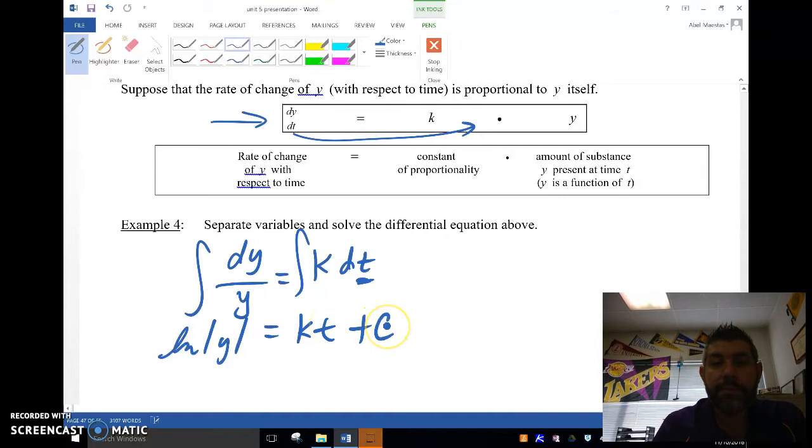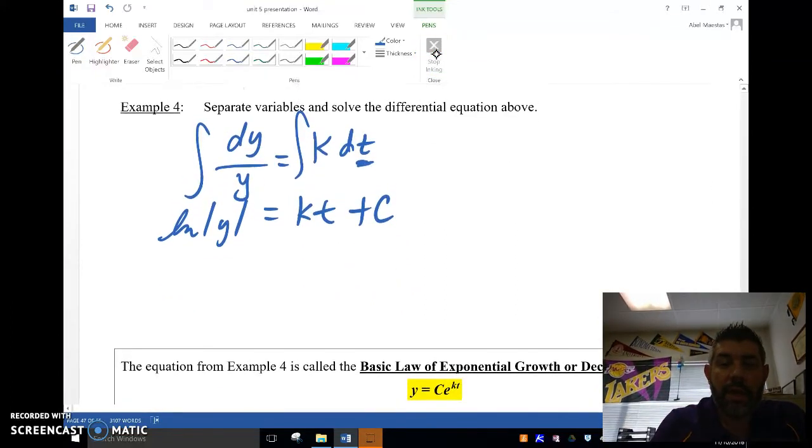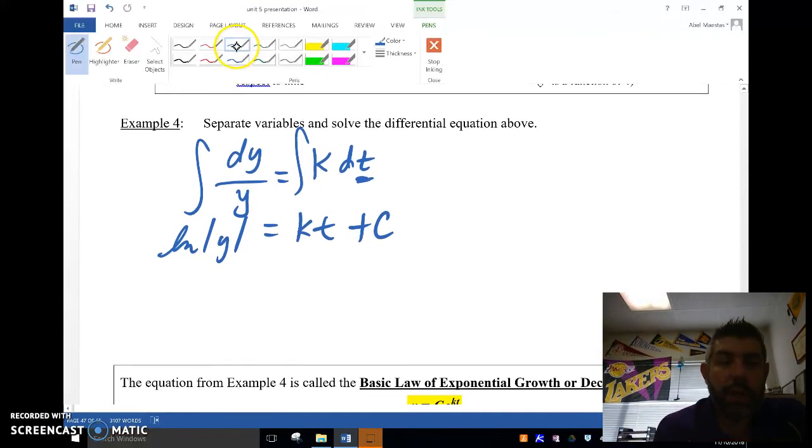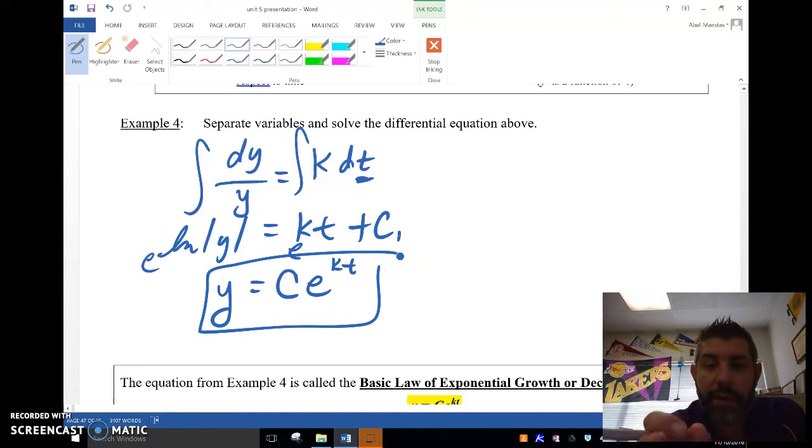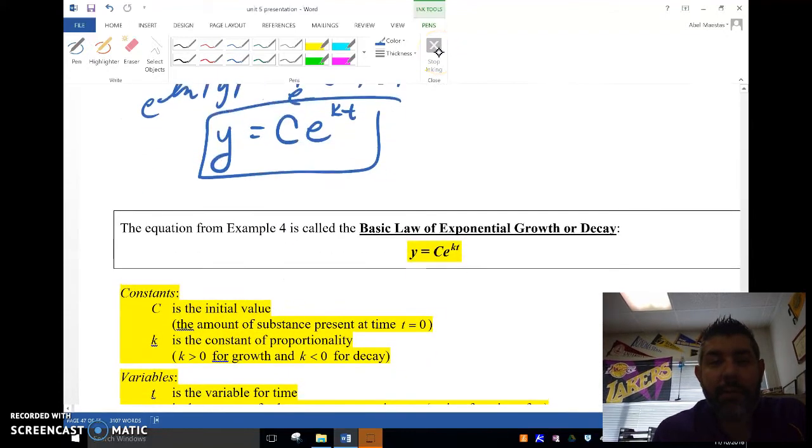And then I'm going to take e to both sides like that, and I'm going to have the absolute value of y, which is just y because e is going to make that positive. So y equals e to the kt times e to the c. E to the c is just going to be another constant, so I'm going to make it big C times e to the kt. And this right here is called the general or basic law of exponential growth and decay. So that's the form we're always going to use.